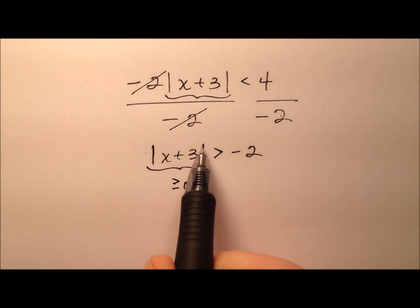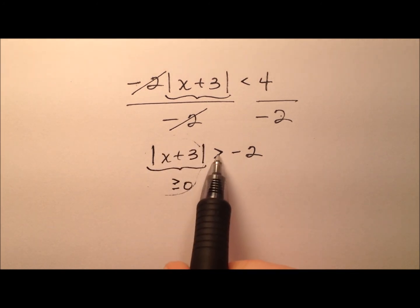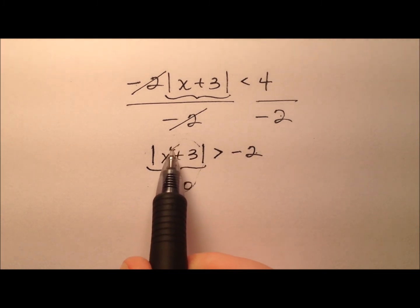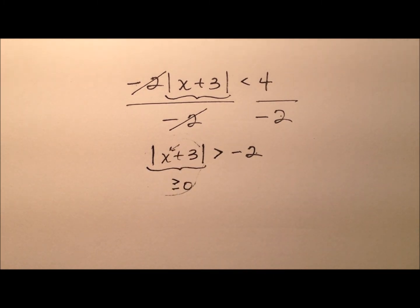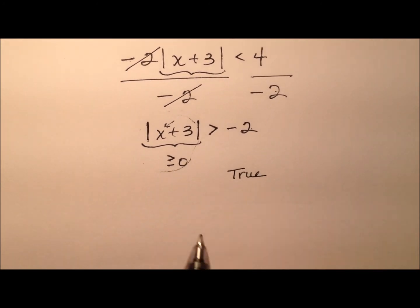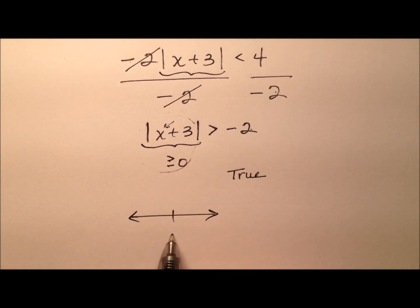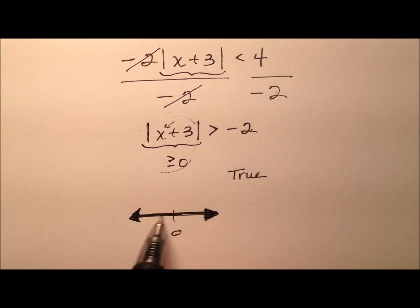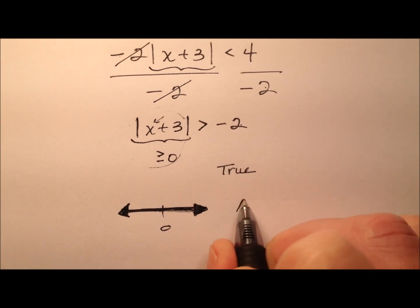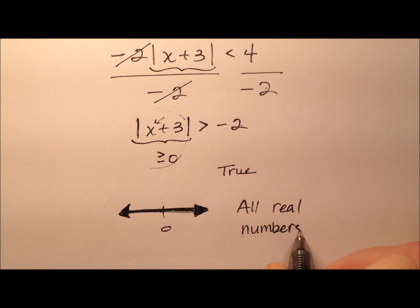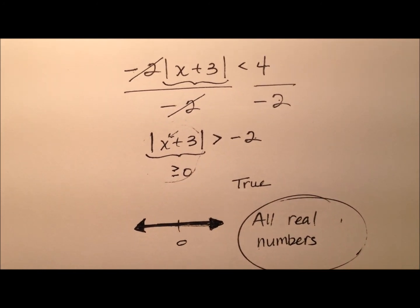So what I have here is this non-negative expression, and I'm saying it's greater than negative 2. It doesn't matter what I plug in for x — it's always going to be true. So this is a true statement. When I graph it, I'll put 0 in the middle and shade the entire real number line. The solution here is all real numbers.